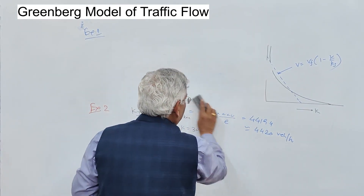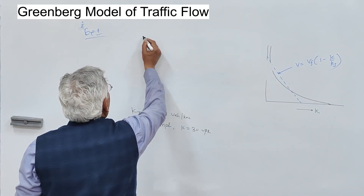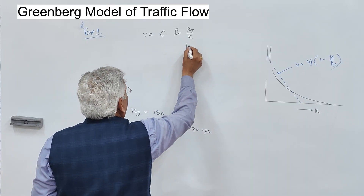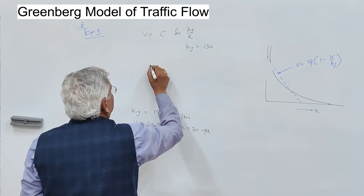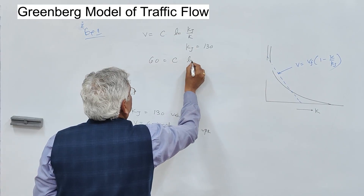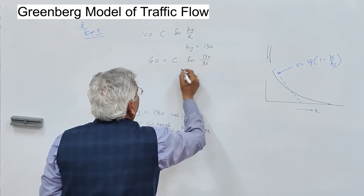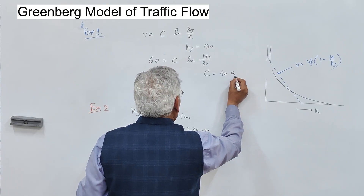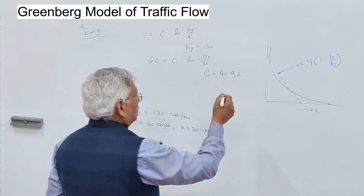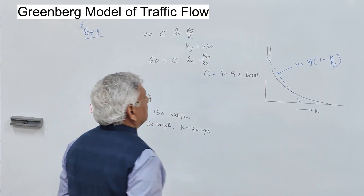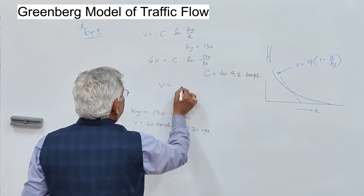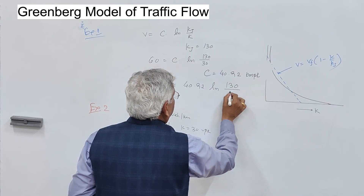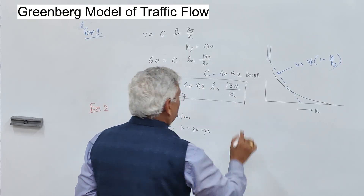Assuming the road traffic follows the Greenberg model, v equals c times ln(kj/k). kj is given as 130 vehicles per kilometre. When speed is 60 kilometres per hour, density is 30 vehicles per kilometre. Using these values to find c gives c equals 40.92 kilometres per hour. The full equation is then: space mean speed equals 40.92 times ln(130/k).